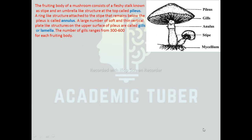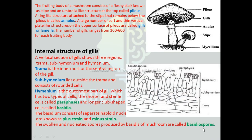The number of gills ranges from 300 to 600 for each fruiting body. Internal structure of gills: a vertical section of gills shows three regions — trama, subhymenium, and hymenium. Trama is the innermost or central region of the gill. Subhymenium lies outside the trama and consists of rounded cells. Hymenium is the outermost part of the gills and has two types of cells: the shorter sterile cells called paraphyses, and longer club-shaped cells called basidia. The basidium consists of separate haploid nuclei known as plus-strain and minus-strain. The swollen and nucleated spores produced by the basidia of mushroom are called basidiospores.